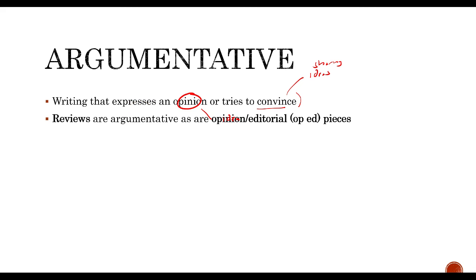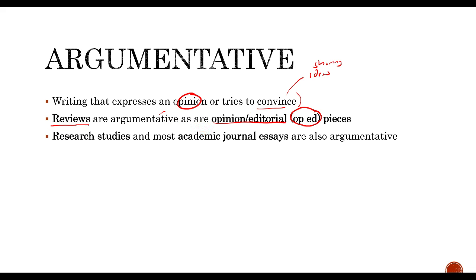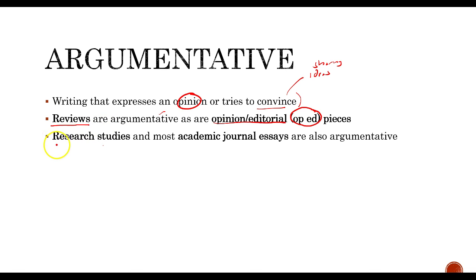There are all kinds of argumentative writing. Reviews are a good example — like a book review or film review — where people try to tell us why we should or shouldn't read a book or see a movie. Also, opinion and editorial pieces, sometimes called op-ed pieces, are published in newspapers or magazines. Much of your academic reading will also be argumentative — research studies and academic journal essays are typically argumentative, and those are the kinds of things you'll be expected to read in college.